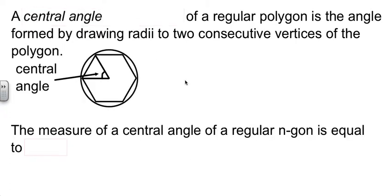Now, you already know what a central angle is for a circle. For a polygon, it's the same idea. It's an angle from the center, but it's connecting two consecutive vertices.